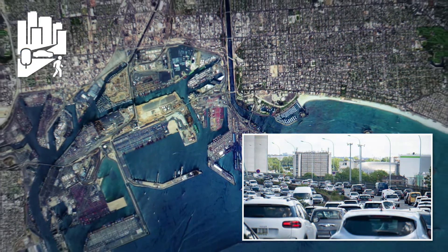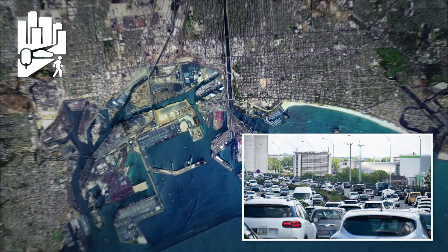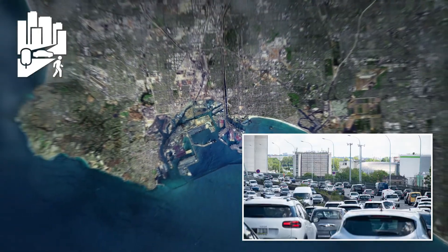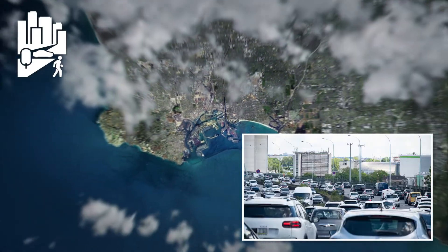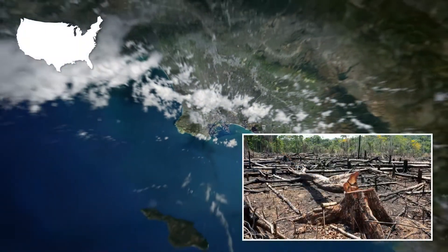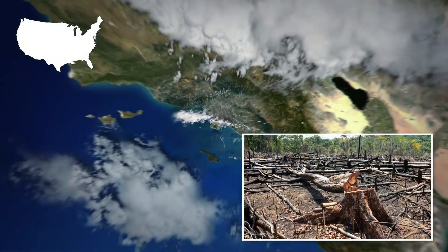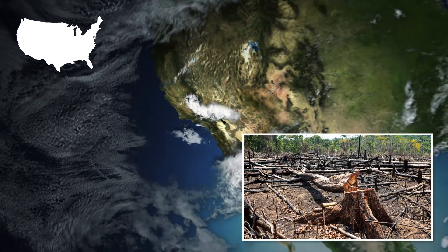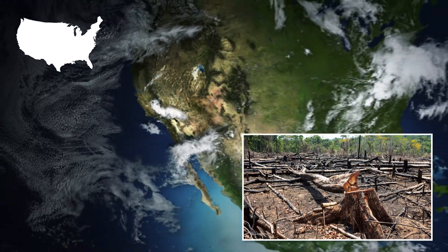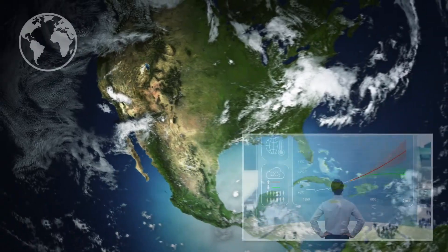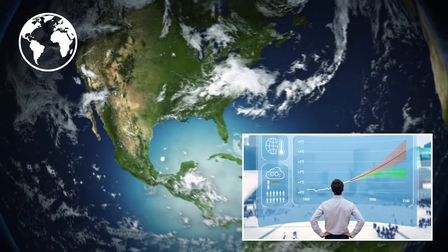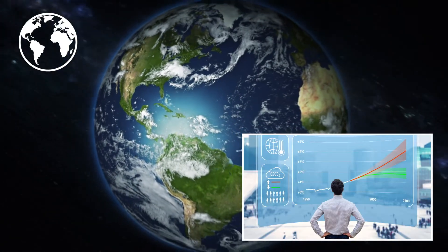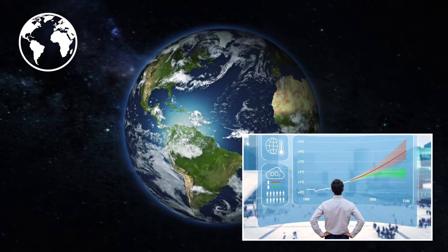At a local scale, geographers might analyze how human activities in individual cities, like burning fossil fuels in cars or factories, contribute to climate change. At a national scale, they might look at how entire countries contribute to and respond to the issue through activities like deforestation or environmental policies. And at a global scale, geographers might analyze how the combined actions of all countries make climate change a challenge for the whole planet.